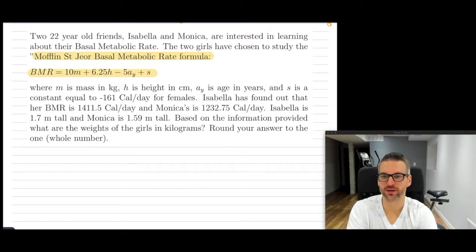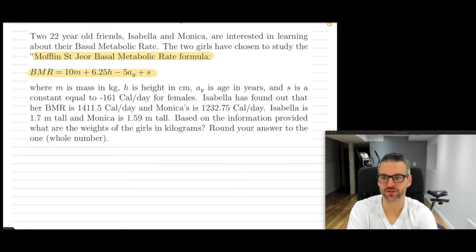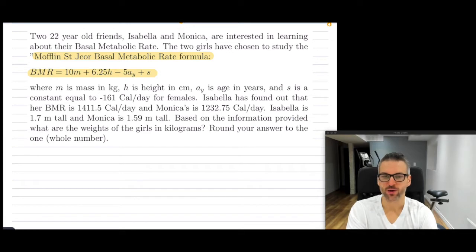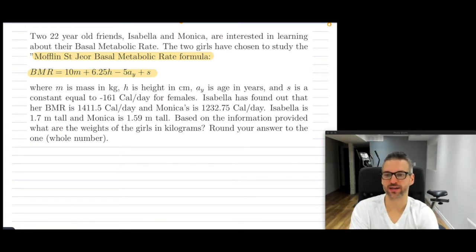Isabella has found that her BMR is 1411.5 calories per day — the number of calories she needs to maintain her basic body functions. Monica's BMR is a little bit lower. We have the height for Isabella and the height for Monica, and based on this information we want to figure out what the weight is for each girl in kilograms, rounding to one decimal place.